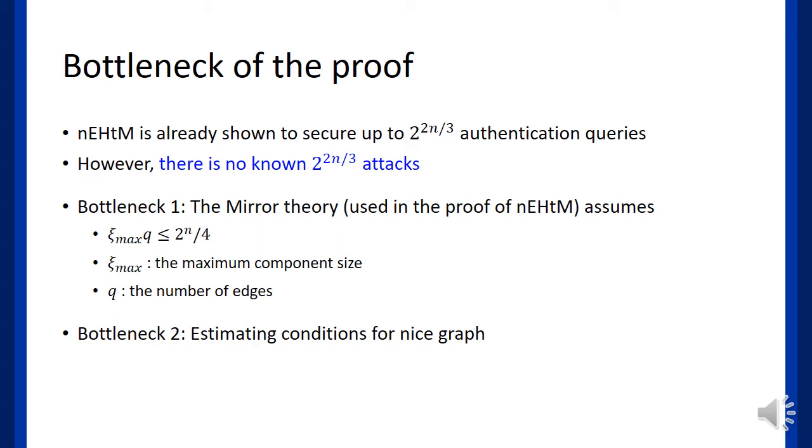nEHtM is already shown to be secure up to 2^{2n/3} authentication queries. However, there are no known matching attacks. Actually, we will show that nEHtM has better security bounds. Then, why did the first proposed proof only show 2^{n/3} bounds?